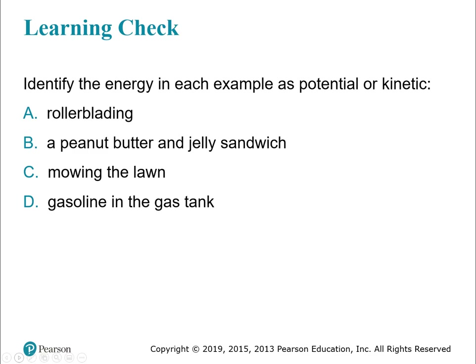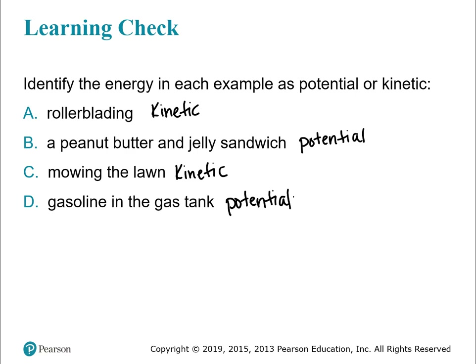Let's identify whether each is kinetic or potential energy. Rollerblading — that's moving, so kinetic. A peanut butter and jelly sandwich — that's food, potential energy your body will break down. Mowing the lawn — that's moving, kinetic. Gas in the gas tank — that's potential energy stored in the chemical bonds.